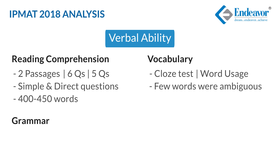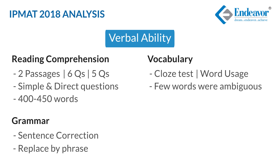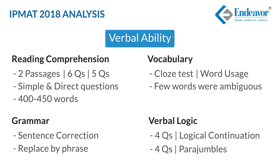Next are grammar based questions, of two types. The first is the traditional sentence correction, and the second was an innovative and slightly newer variety requiring students to replace a group of words with an alternative phrase given in the options. The fourth variety is verbal logic based questions — there were four questions on logical continuation and four on para jumbles. Instead of standard option-based para jumbles, students were required to key in the correct combination of the jumbled sentences, making these non-MCQ questions.